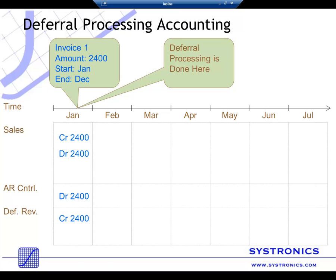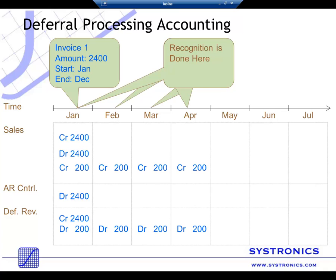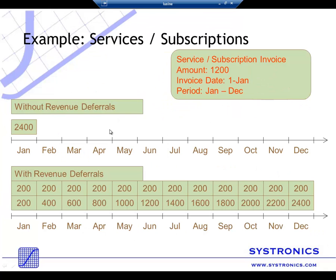Then a schedule will be created. In this case, let's say this is for one year, so the amount will be split into 12 periods and a correct portion of revenue will be recognized every month — $200 will be recognized in January, February, March, and so on until the entire amount is recognized. Without revenue recognition, you would have $2,400 recognized in January, whereas with Revenue and Expense Deferrals you have $2,400 split into the contract period.